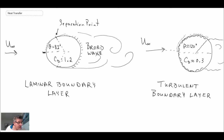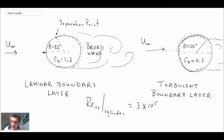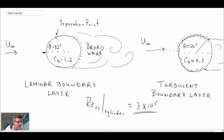The critical Reynolds number for a cylinder, based on diameter, is about 3×10⁵. That is where we go through the transition process, the separation point moves further downstream, and we get very different heat transfer characteristics. This has an impact on convective heat transfer, meaning we need relationships that are a function of Reynolds number, which we'll be seeing in a later segment of this lecture.